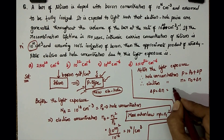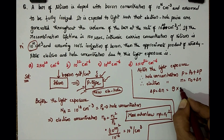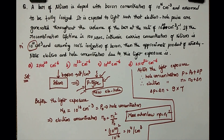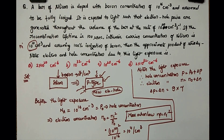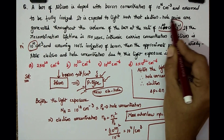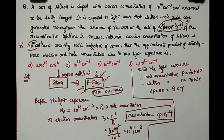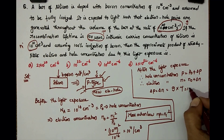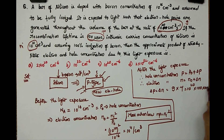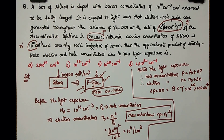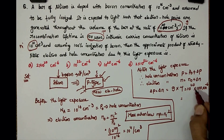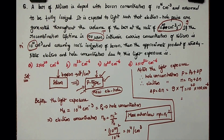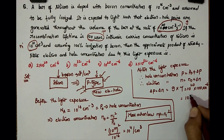The formula for the excess carrier concentration is: delta n equals generation rate g multiplied by recombination lifetime tau. Substituting: g is 10 power 20 and tau is 100 microseconds, which is 100 times 10 power minus 6. So delta n equals 10 power 20 times 10 power minus 4, which gives 10 power 16 per centimeter cube.